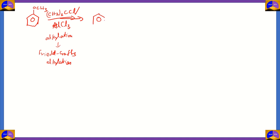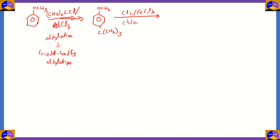After anisole undergoes Friedel-Crafts alkylation, the OCH₃ group is still there, but you have a trimethyl group — (CH₃)₃C — that gets added to the compound. After the trimethyl group gets added, the next step is to react it with Cl₂ and FeCl₃. This step is basically chlorination, so Cl₂ gets added to the compound. Once added, you have the benzene ring with the OCH₃ group and the C(CH₃)₃ substituent, along with a chlorine substituent at the ortho position.